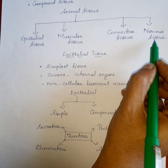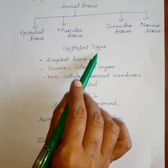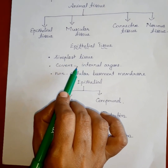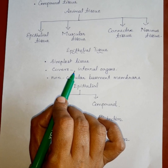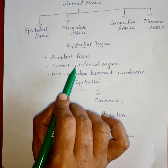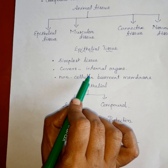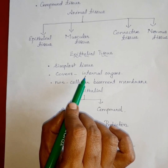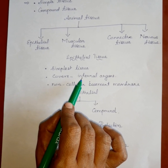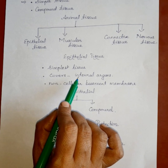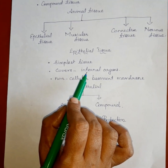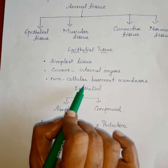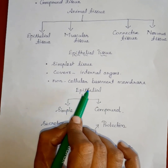Epithelial tissue is the simplest tissue. It is composed of one or more layers of cells. It covers the external surface of the body and internal organs. The cells are arranged very close together, and the epithelial cells lie on the non-cellular basement membrane.